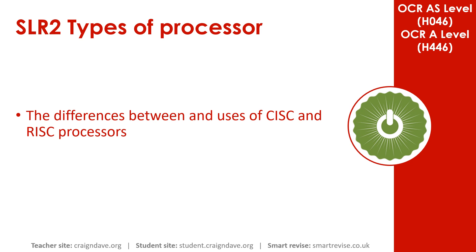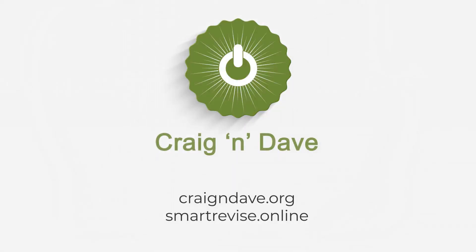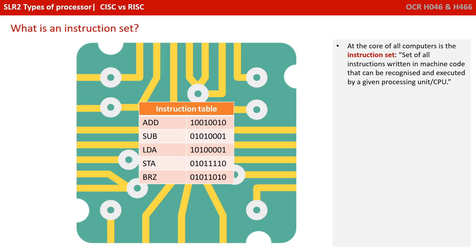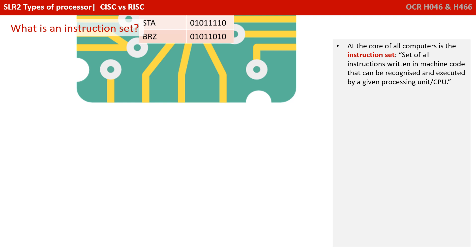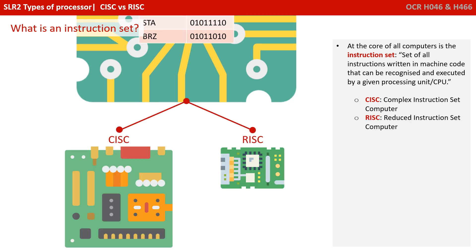In this video we take a look at the differences between and the uses of CISC and RISC processors. At the core of all computers is what is known as the instruction set. This is effectively the set of all instructions written in machine code that can be recognised and executed by a given processing unit or CPU. There are two main different categories of instruction sets: the complex instruction set computer, CISC, and the reduced instruction set computer, RISC.